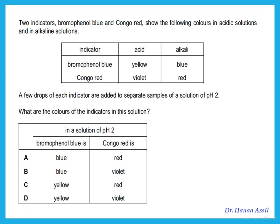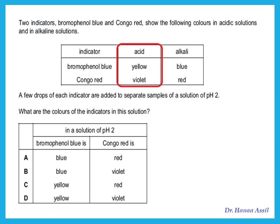Two indicators, bromophenol blue and congo red, show different colors in acidic and alkaline solutions. A few drops of each indicator are added to a solution of pH 2. pH 2 is acidic, so bromophenol blue should turn yellow and congo red should turn white. The answer is D.